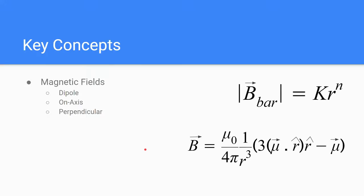As for some key concepts, the lab will deal with magnetic fields, in particular, dipole magnetic fields, because that's how we'll model our bar magnet. So we'll be using the ideas of on-axis and perpendicular magnetic fields. And these are some equations that will come into play shortly.